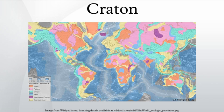Cratons have thick lithospheric roots. Mantle tomography shows that cratons are underlain by anomalously cold mantle corresponding to lithosphere more than twice the typical 100 km thickness of mature oceanic or non-cratonic continental lithosphere. At that depth, craton roots extend into the asthenosphere. Craton lithosphere has a neutral or positive buoyancy and a low intrinsic isostatic density. This low density offsets density increases due to geothermal contraction and prevents the craton from sinking into the deep mantle.